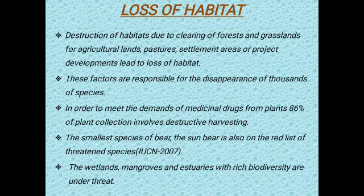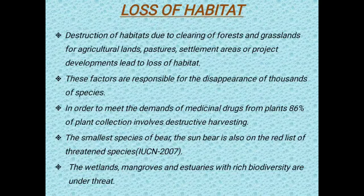Loss of habitat: there are totally eight points. First, destruction of habitats due to clearing of forests and grasslands for agricultural lands, pastures, settlement areas, or project developments leads to loss of habitat. These factors are responsible for the disappearance of thousands of species. To meet the demands of medicinal drugs from plants, 86% of plant collection involves destructive harvesting. The sun bear, the smallest species of bear, is also on the IUCN 2007 red list of threatened species. The wetlands, mangroves, and estuaries with rich biodiversity are under threat.